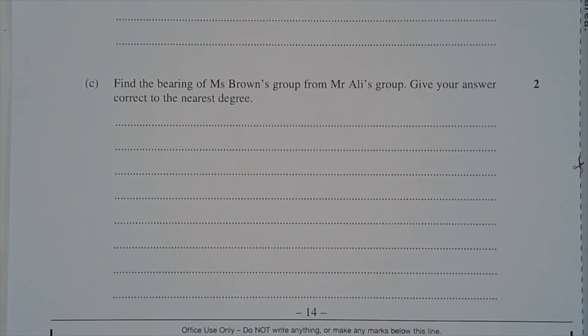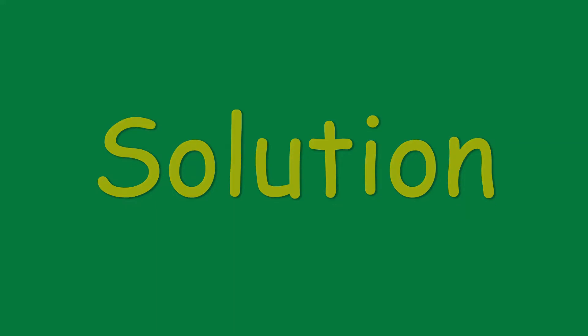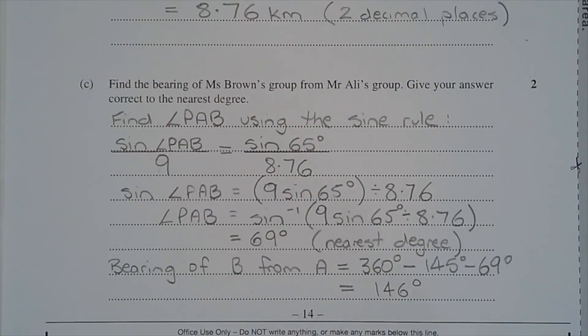Part C. Find the bearing of Miss Brown's group from Mr. Ali's group. Give your answer correct to the nearest degree. In order to find the bearing of Miss Brown's group from Mr. Ali's group, another angle in triangle APB needs to be determined. Now there are three known sides and a known angle already. That means there's one known side angle pair, which means the sine rule can be applied to find another angle in triangle APB.